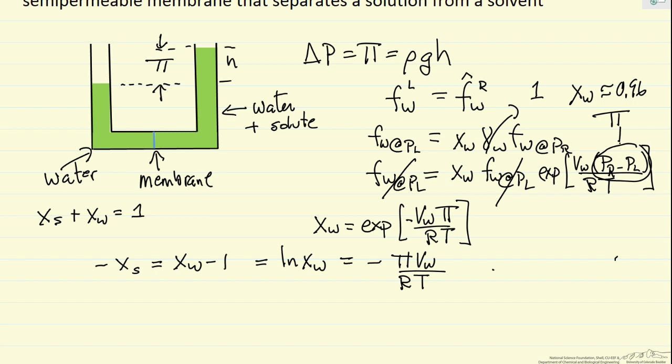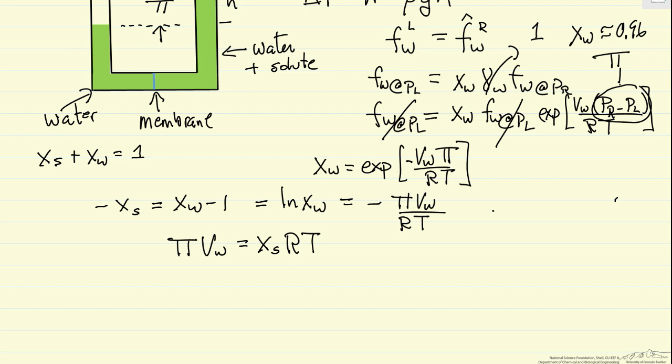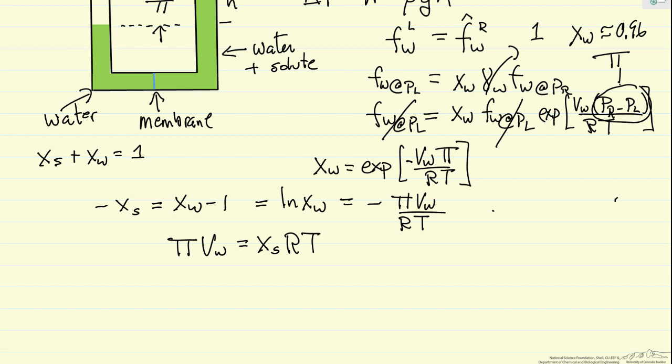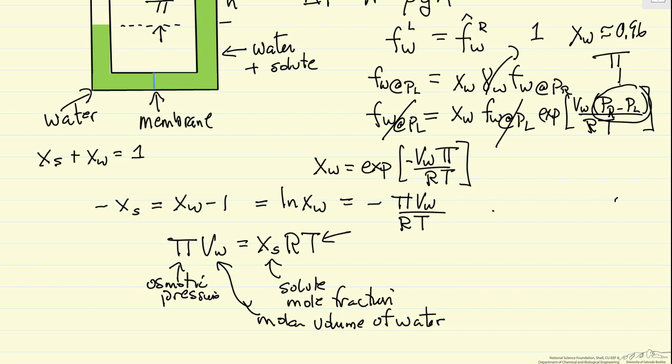Now I have minuses on both sides, so I can rearrange this equation. I can write it as the osmotic pressure times the volume of water equals the mole fraction of the solute times RT (gas constant times absolute temperature). This looks very much like the ideal gas law. This is the osmotic pressure, this is the solute mole fraction, and this is a molar volume of liquid water.